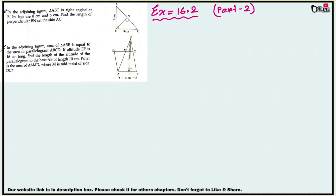The link will be in the description box. In sum number 8, in the adjoining figure, triangle ABC is a right angle triangle at B. Its legs are 8 centimeters and 6 centimeters. Find the length of perpendicular BN on the side AC. It's a very easy problem.